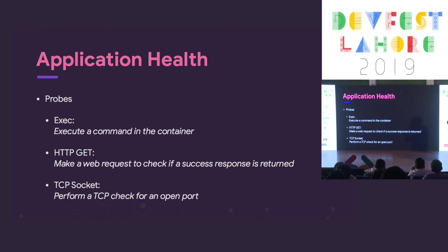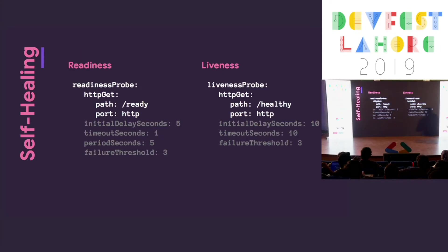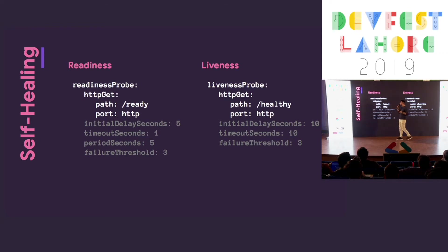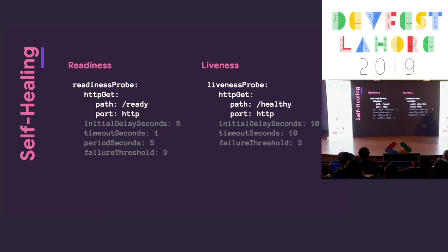Both of these checks can be performed in three ways. The first one is running a command in the container to check its exit code. Second is making a web request to your web server to see if it sends back a successful response. And the third one is trying to open a socket. Since most of us here are web developers, I'll just focus on the second one — the HTTP GET probe. Both of these probes can be configured with just a few lines of YAML code. The health check config we use at Slab is actually much shorter than this.